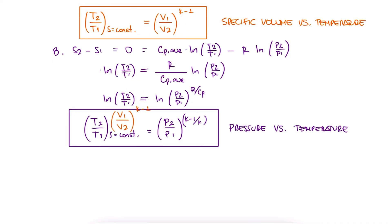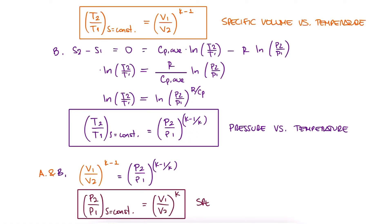And of course, if we combine these two expressions, we can write P2 over P1 equal to v1 over v2 to the k. And these are the expressions that we can use for the approximate analysis.